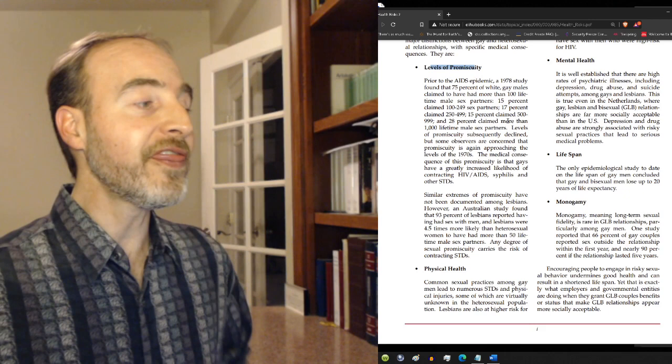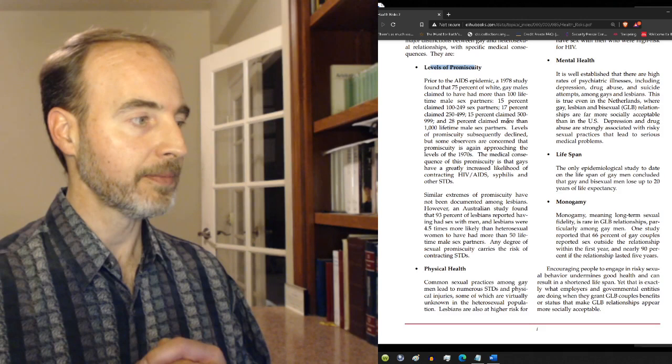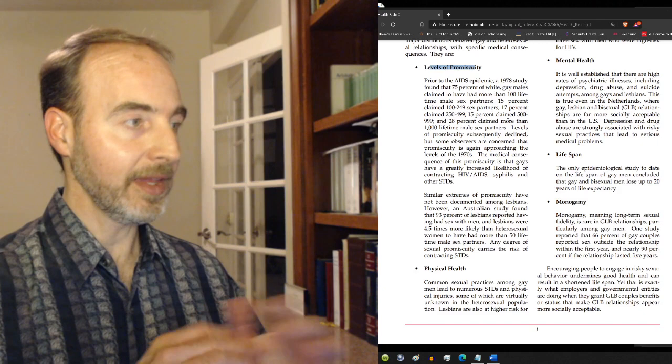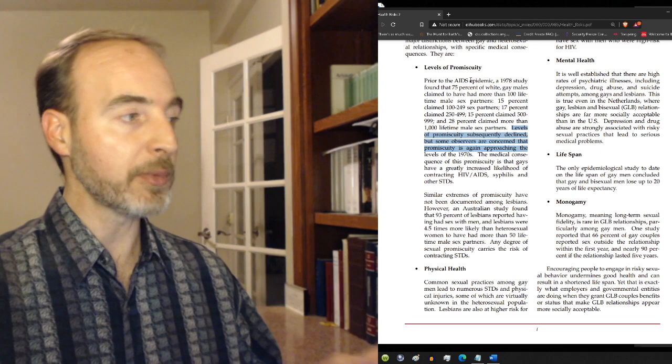More than 1,000 lifetime male sex partners. This is for white gay males in a 1978 study that this article is referring to. Levels of promiscuity subsequently declined, but some observers are concerned that promiscuity is again approaching the levels of the 70s. That was prior to the AIDS epidemic.